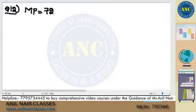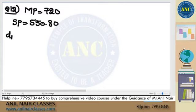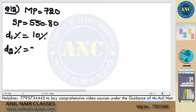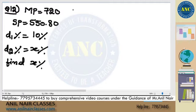Market price is 720. Selling price is 550.80. First discount percentage is given as 10%, second discount percentage is given as x%, find x. Sir, this came in my mock, can you please solve it?